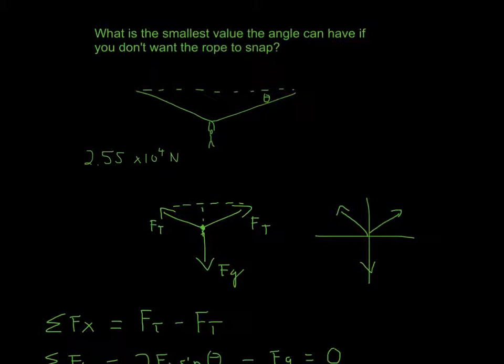So once again, all you do is just draw a free body diagram. So you have the guy in the middle represented by a dot. You have all the forces acting on him, which is going to be gravity and tension force on either side.